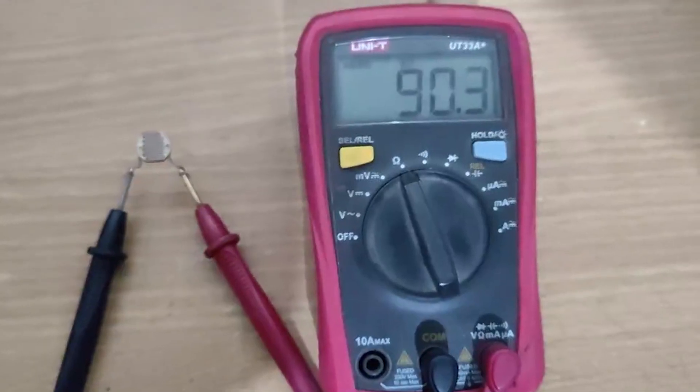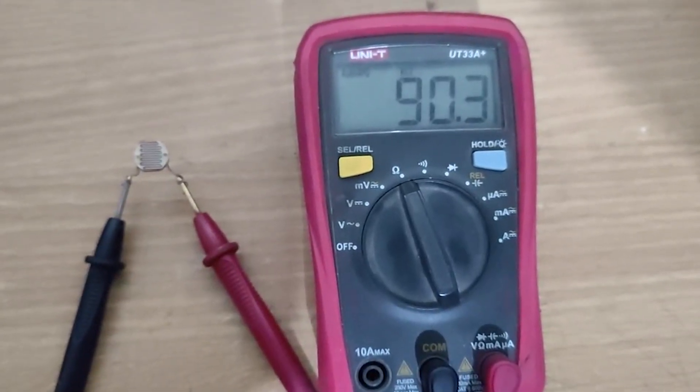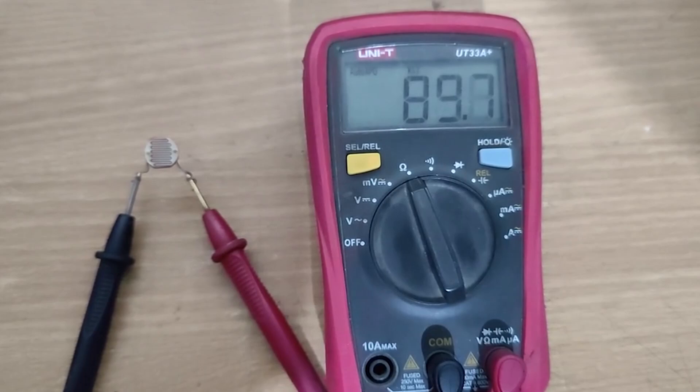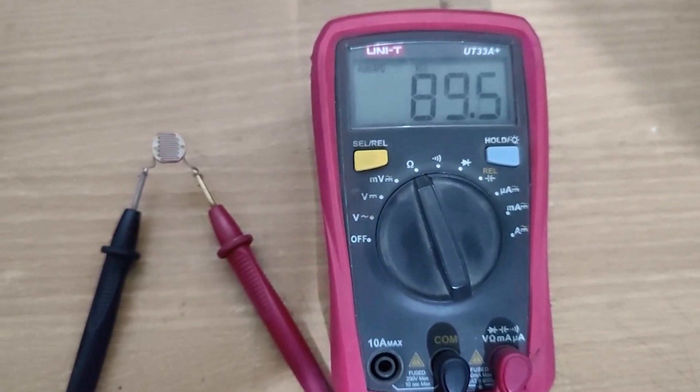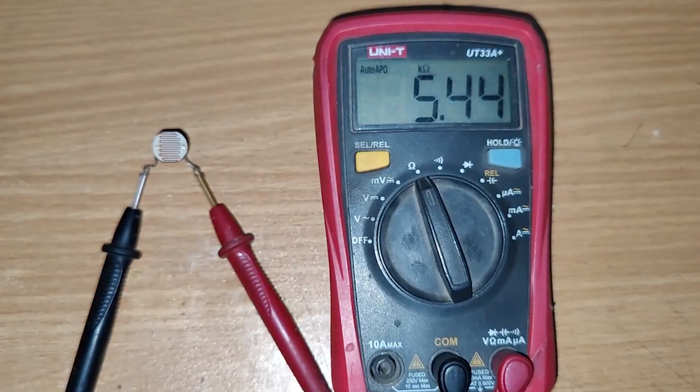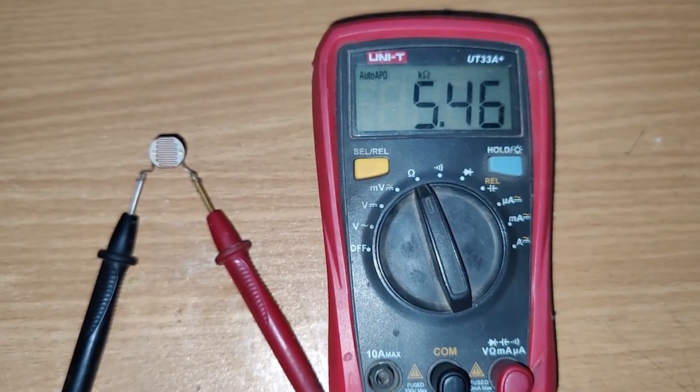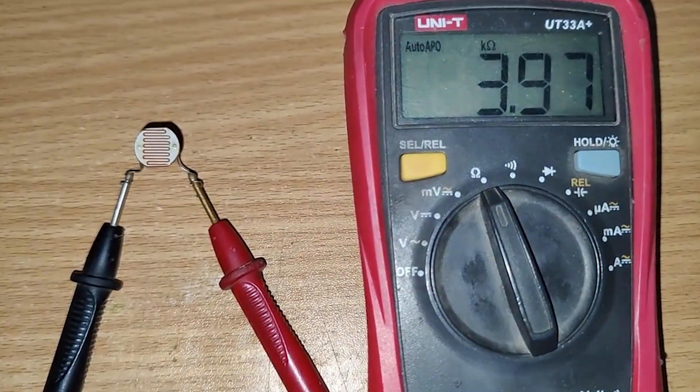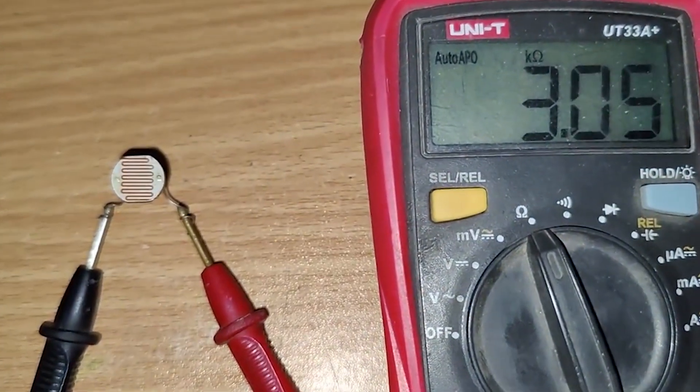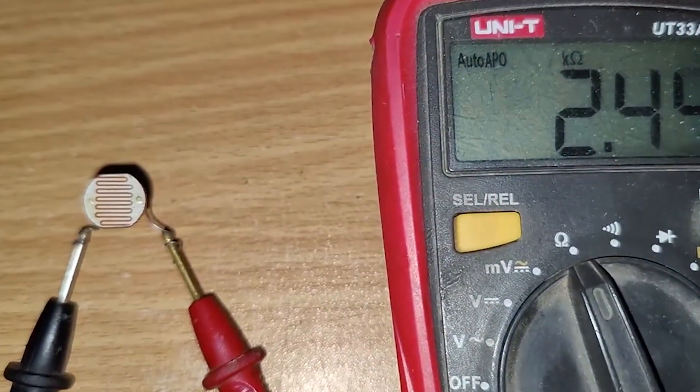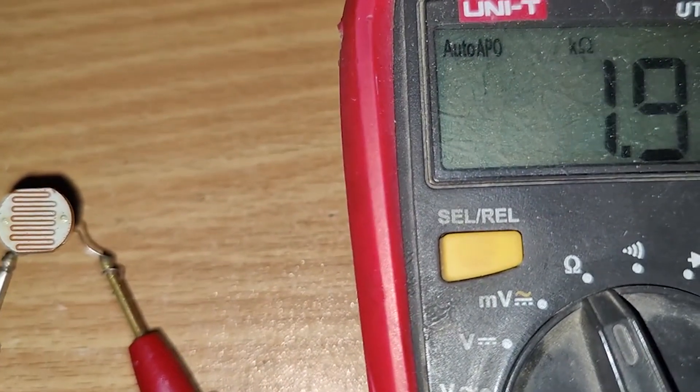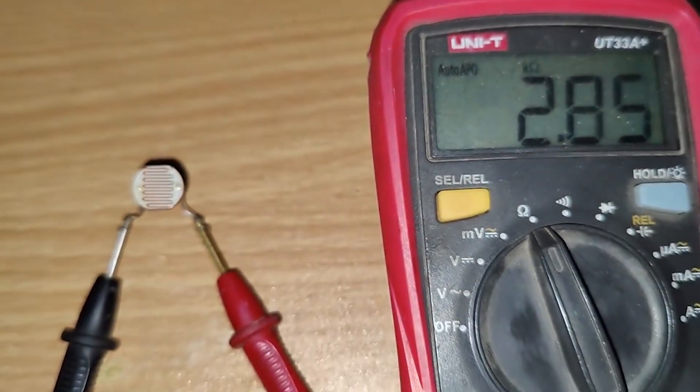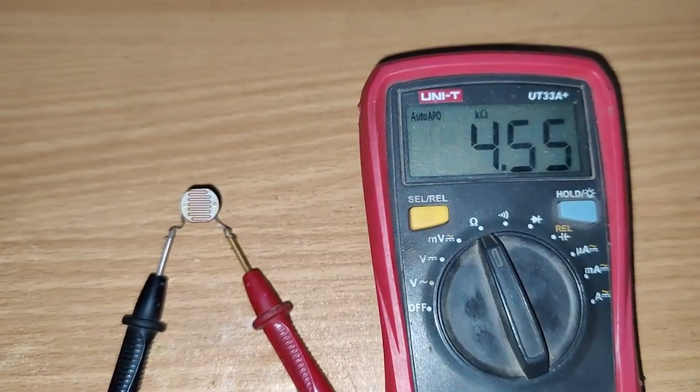Let's do a quick experiment to show how LDR works. I've set a multimeter to measure the resistance of the LDR. Watch what happens when we shine a light on it. As you can see, the resistance drops significantly when I increase the light intensity. This simple property makes LDRs incredibly versatile in light detection circuits.